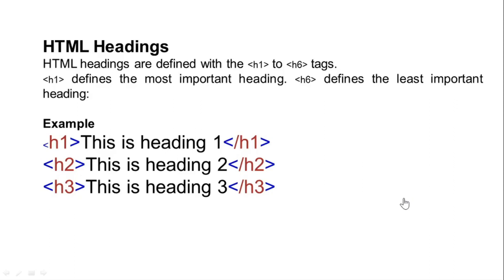The heading tags should be a heading. The heading tags range from H1 to H6. H1 is the most important heading. H2, H3, through H6 are progressively smaller. Here is a sample code for H1, H2, H3, H4, H5, and H6.